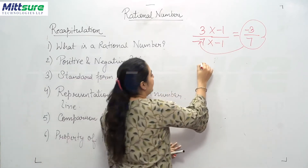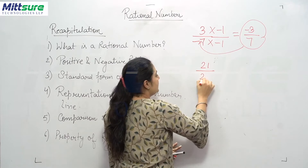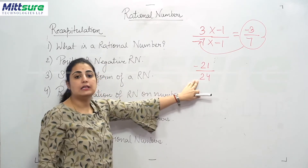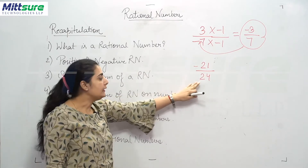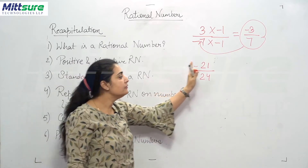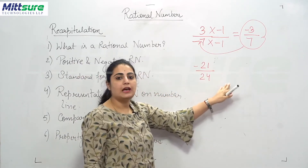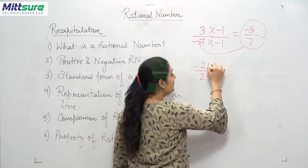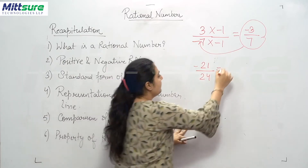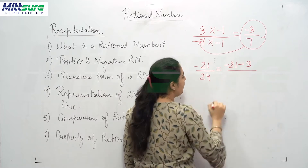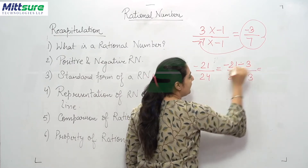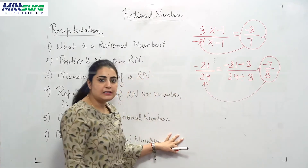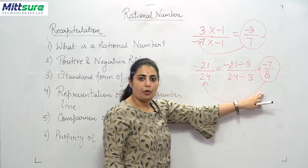Now let's say it is minus 21 upon 24 — this is not the simplest form. We need to take out the HCF of both numbers and convert them to simplest form. The HCF of 21 and 24 is 3. So when I divide 21 by 3 and 24 by 3, I get minus 7 upon 8. So the standard form of minus 21 upon 24 is minus 7 upon 8.